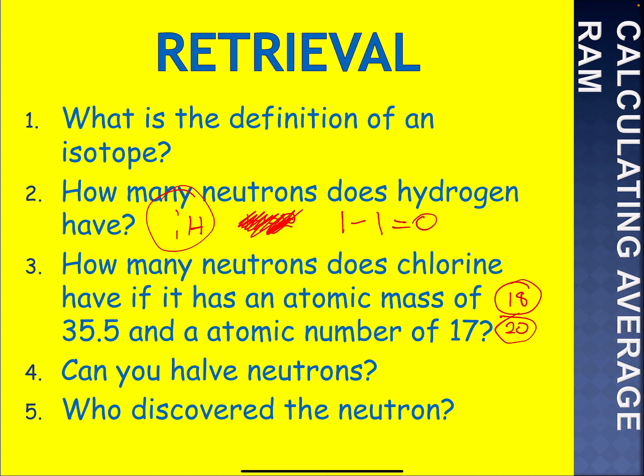Can you have fractional neutrons? No. Number five: who discovered the neutron? James Chadwick — around about the 1930s, the neutron was discovered.